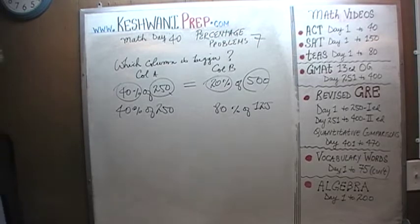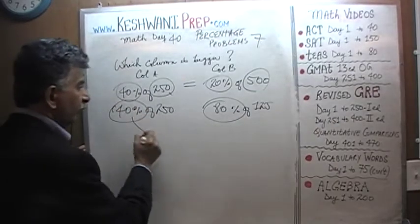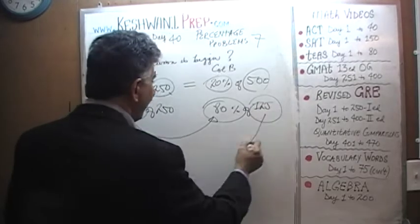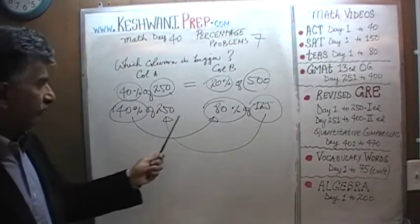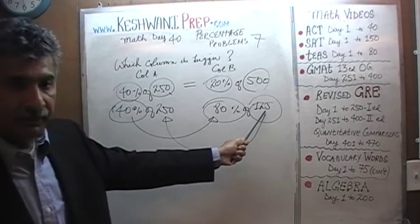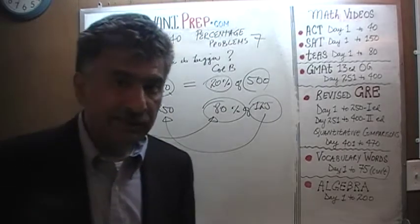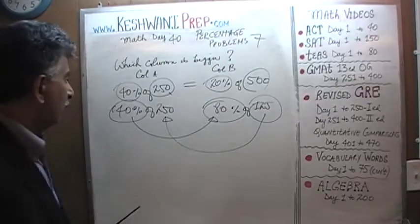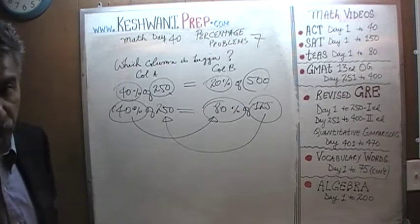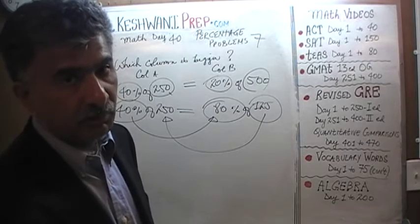We have twice the percentage — instead of 40% we have 80%. We have twice the percentage but half the number. Instead of 250 we have half the number, 125. Half the number but twice the percentage — they are going to cancel each other out, negate each other. It turns out these two quantities are also equal. The answer is neither column is bigger; they are both equal to each other.